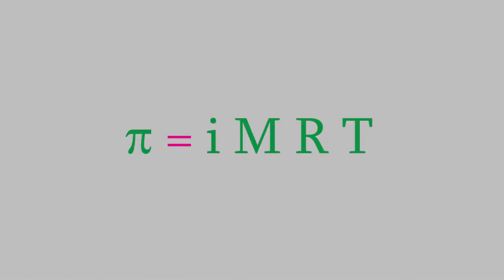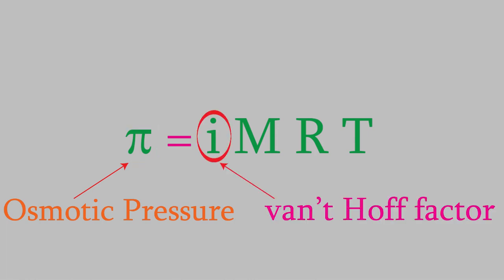Here's an equation for the osmotic pressure. Pi here is the symbol we use for osmotic pressure, and it's usually measured in atmospheres. This is not the number pi that you know about from geometry and mathematics. The rest of the variables are probably familiar to you from the previous videos.